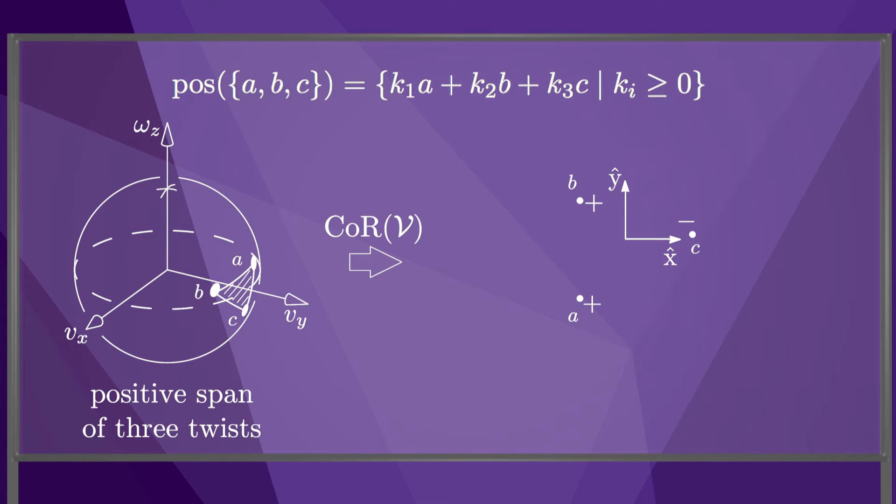As an example, let's construct a polyhedral convex twist cone as the positive span of the three unit twists a, b, and c. The intersection of that twist cone with the unit sphere is indicated. Using the center of rotation mapping, the twist cone can be represented as this region of rotation centers.